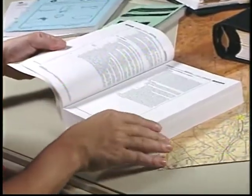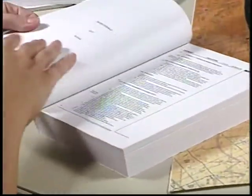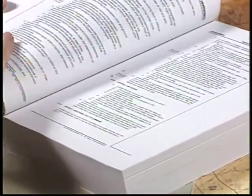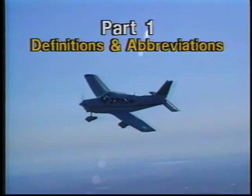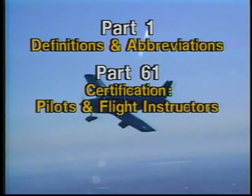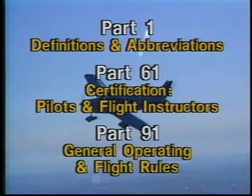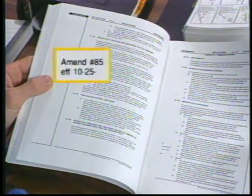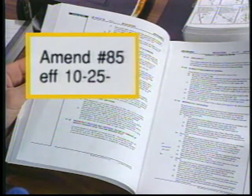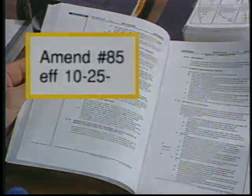Let's begin with one which contains specific information: the Federal Aviation Regulations. A few of the areas you should be familiar with are Part 1, Definitions and Abbreviations; Part 61, Certification of Pilots and Flight Instructors; and Part 91, General Operating and Flight Rules. Due to the ongoing changes in the FARs, it's important that you have access to current editions and review them periodically.